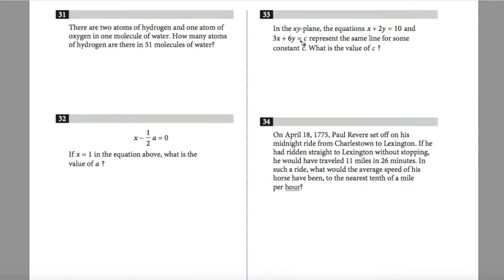Question 33, in the xy plane, the equations x plus 2y equals 10 and 3x plus 6y equals c represent the same line for some constant c. What is the value of c? If I line these up, I see that x plus 2y equals 10. The relationship is that x going to 3x, I'm multiplying by 3. 2y going to 6y, I'm multiplying by 3 as well. So 10 multiplied by 3 should give me c, so c will be equivalent to 30.